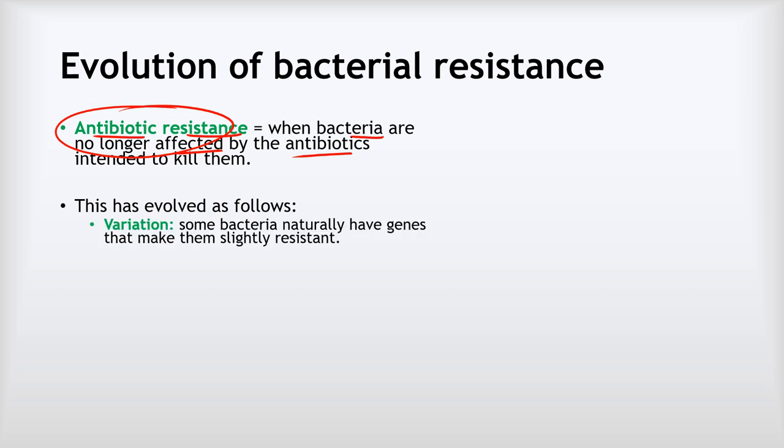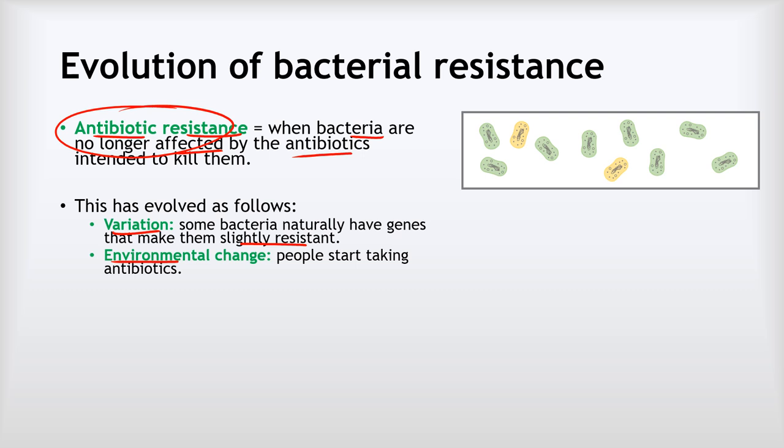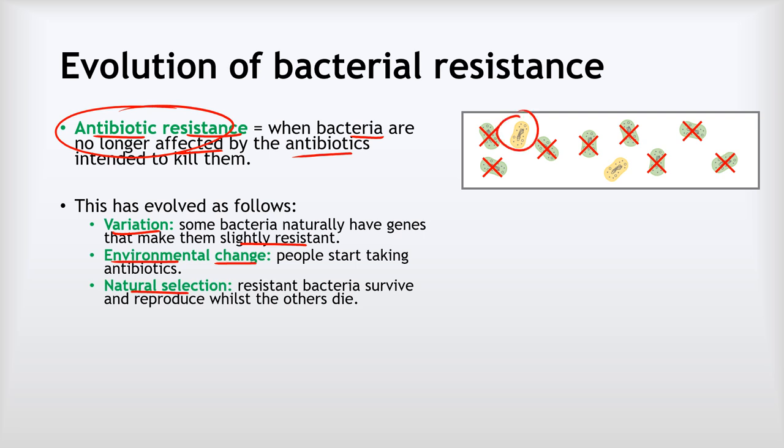It worked like this. We started with variation. Some bacteria naturally have genes that make them slightly resistant to antibiotics. Our green ones are the normal bacteria, and the yellow ones have those slight resistance genes. We get environmental change—in this case, the person starts taking antibiotics, and that's changed the environment the bacteria are living in. All the green ones end up getting killed by the antibiotics. That's natural selection: the resistant bacteria survive and reproduce whilst the others die.